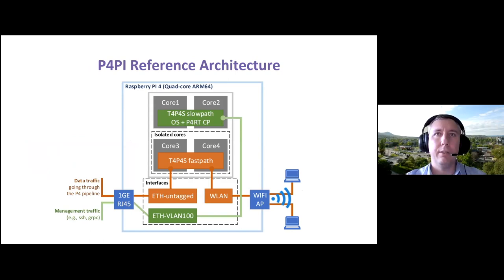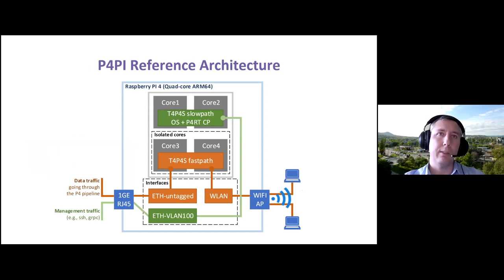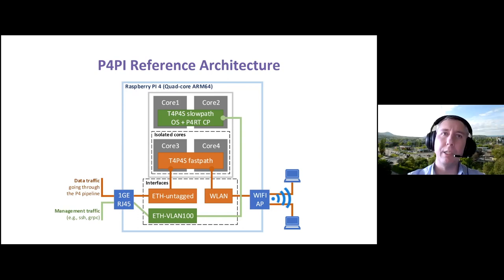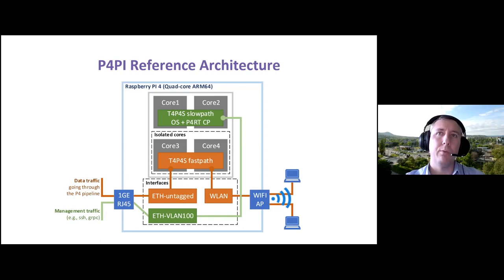We chose the latest Raspberry Pi single board computer with a quad-core ARM64 processor. We isolated two CPU cores dedicated for packet processing purposes, and the non-isolated cores run the operating system and the slow-path component of the Tapas switch — for example, the P4 runtime server or co-located control plane applications. The Wi-Fi interface is set up in access point mode and bridged to Tapas's fast path. We also maintain a separate management network to access the PAPI node via SSH or connect it to a remote control plane application through gRPC.